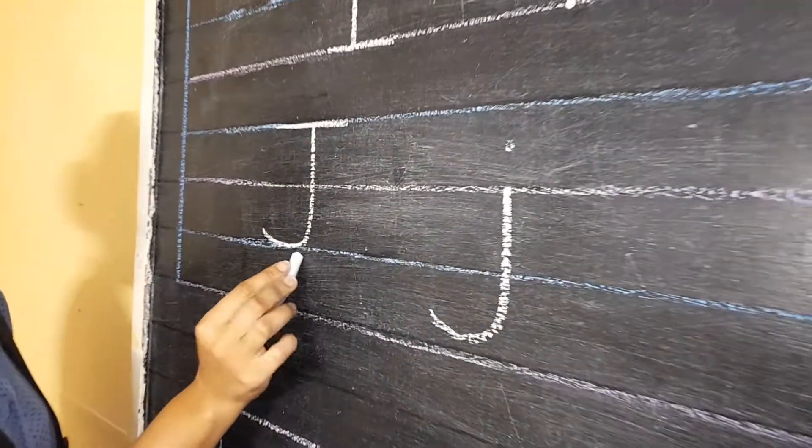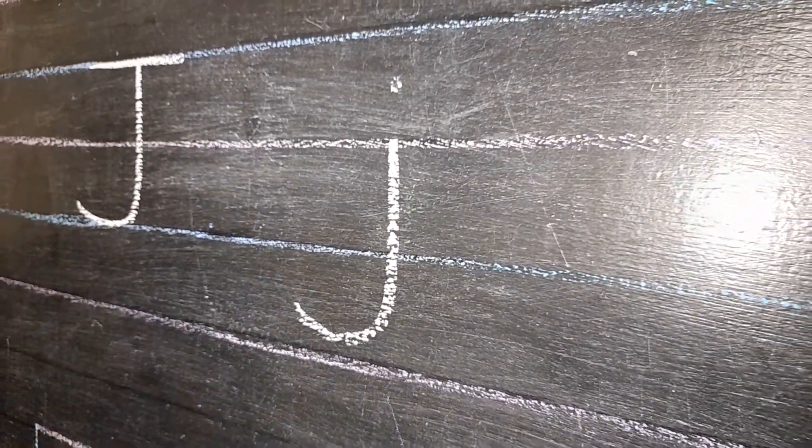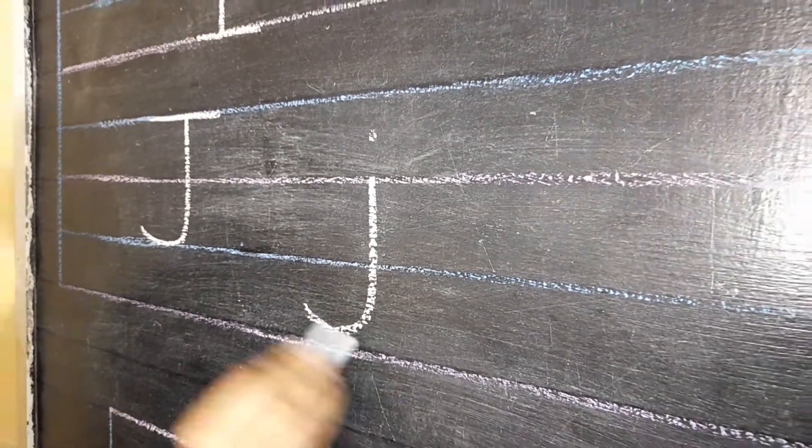Big letter J sits on the line. Small letter J hangs. Can you see that? Big letter J is sitting and small letter J is hanging.